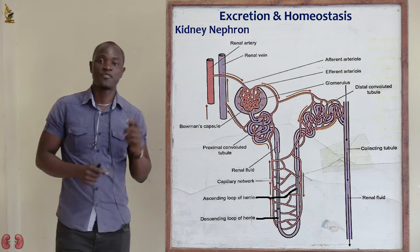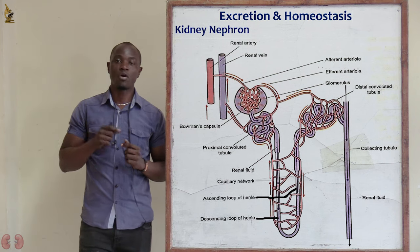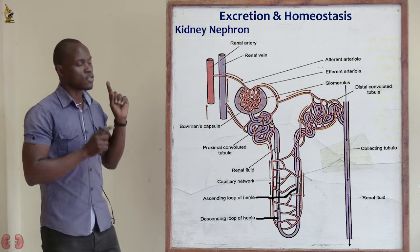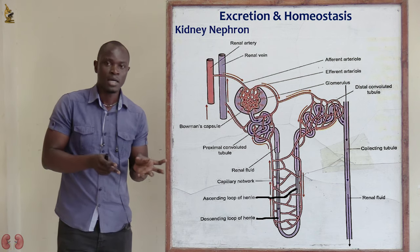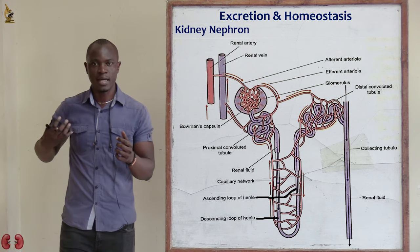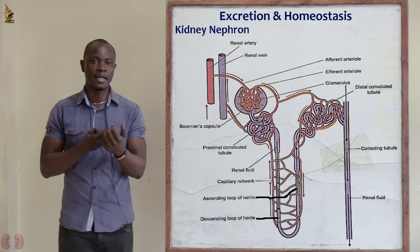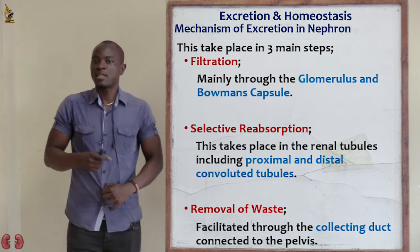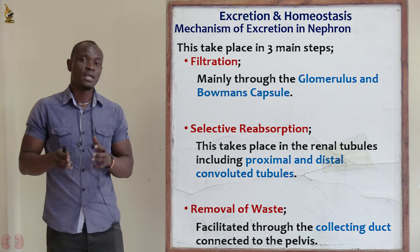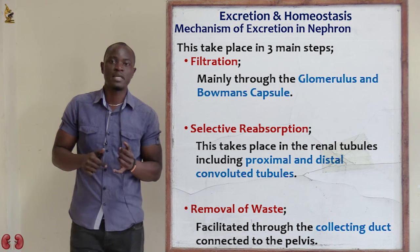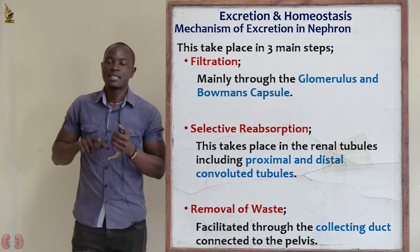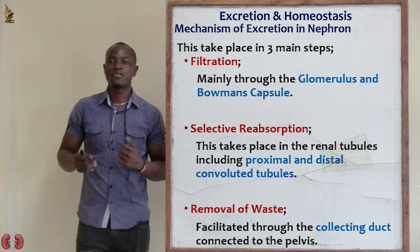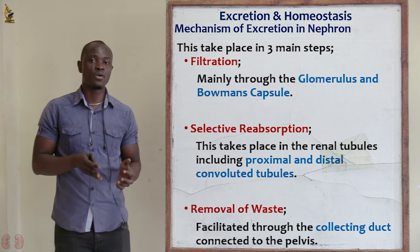Now that we know the structure of the nephron, let's look at the mechanism of excretion — how excretion takes place in this nephron. How is it that these waste products are filtered out of the blood while essential things like blood cells are let to pass? Excretion through the nephron takes place in three basic steps: the first step is filtration; the second step is selective reabsorption, whereby different substances are reabsorbed back into the bloodstream; and lastly, we have removal of waste products.